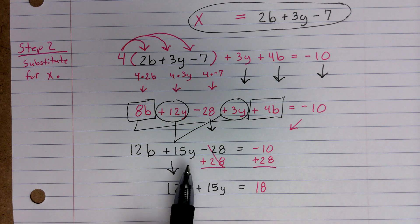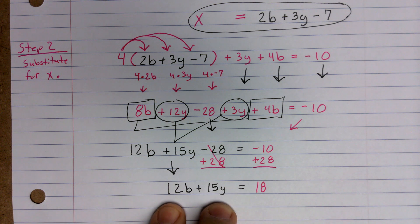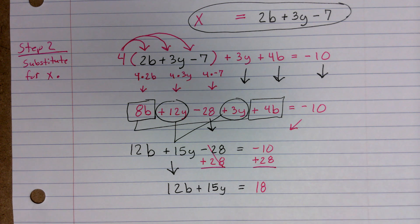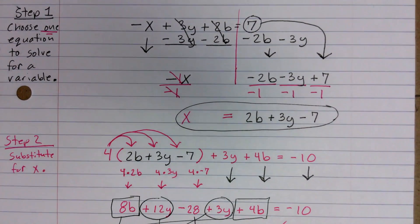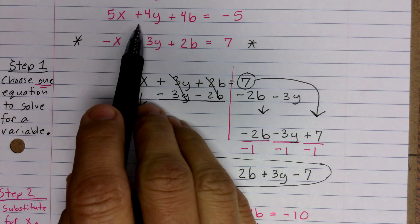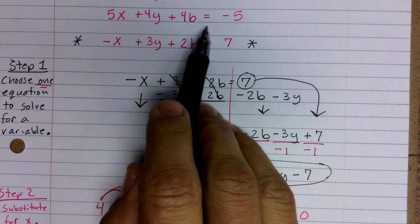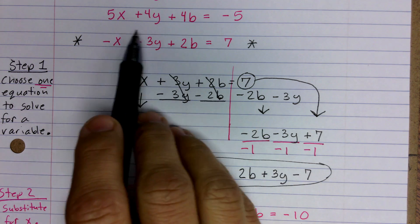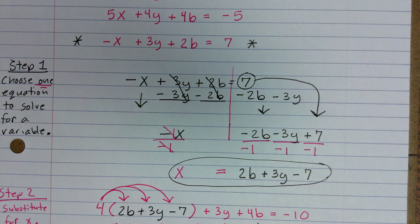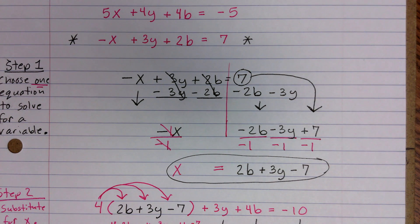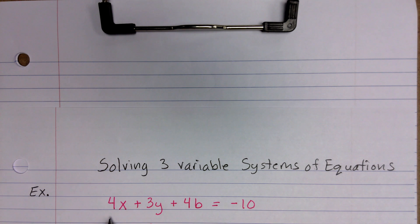We're going to do the same process with the second equation so we can have another equation with just two variables. Then we'll solve it like a normal two-variable system using elimination, graphing, or substitution. In this case I'm going to use elimination. The second equation is 5X plus 4Y plus 4B equals negative 5, and now we're going to substitute for X on this one, just like we did with the other.